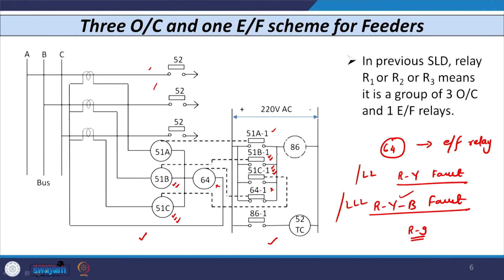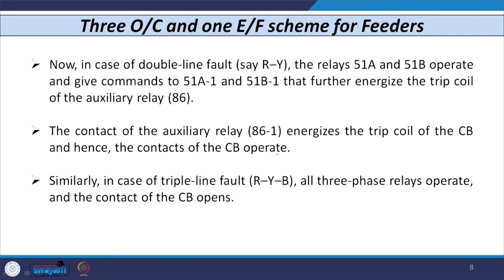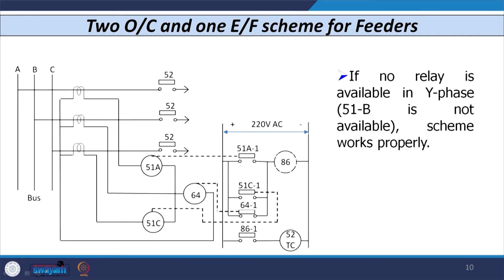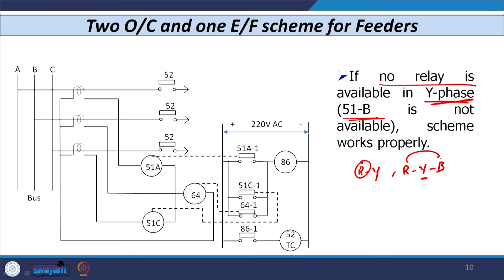Sometimes it may be possible that if one unit is removed from the scheme, it becomes the two overcurrent and one earth fault scheme. If unit 51B has been removed from Y phase, and an R-Y fault occurs, though there is no unit in Y phase, the unit 51A in R phase still operates and further tripping is given. If an R-Y-B fault occurs and there is no unit in Y phase, units 51A and 51C operate and further tripping is initiated.